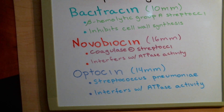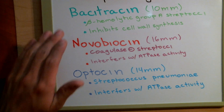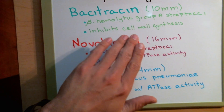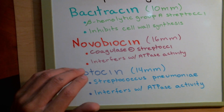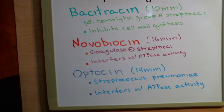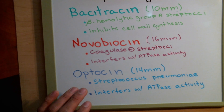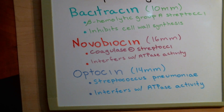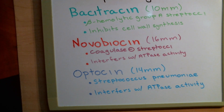A memory trick: Bacitracin starts with a B, so that's your beta-hemolytic group A streptococci. Novobiocin — there is going to be no coagulase streptococci. And Optocin is the only one here that has a P, and that goes with pneumoniae — Streptococcus pneumoniae. All of these involve streptococci. That's just what worked for me; I hope it helps. If you have something better, please feel free to let me know.